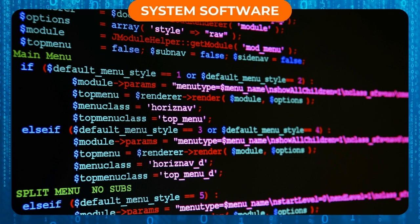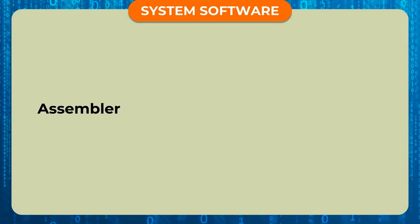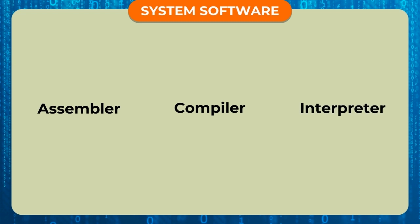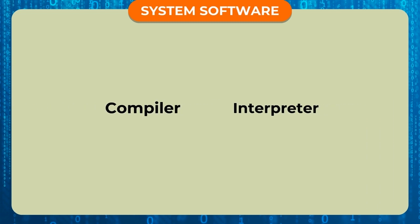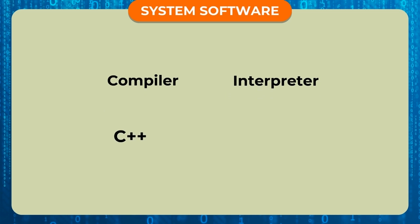Language Translators include Assembler, Compiler, and Interpreter. Compilers and Interpreters of C++, C, and Pascal are examples of Language Processors.